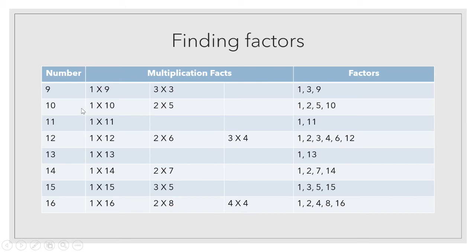All numbers come in the table of one, because one one is one, one two is two, one three is three, and so on. For ten — one tens are ten, ten ones are ten, two fives are ten, and five twos are ten. So the factors of ten are one, two, five, and ten.